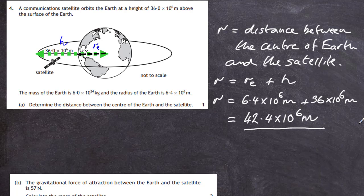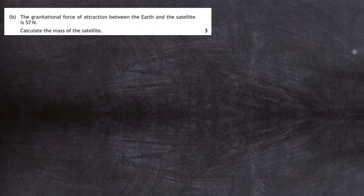So that's the distance from the centre of the Earth right out to the satellite — and that's the value of R we use when working out the gravitational force of attraction between the Earth and the satellite, which is part B. The gravitational force of attraction between the Earth and the satellite is 57 newtons. Calculate the mass of the satellite.